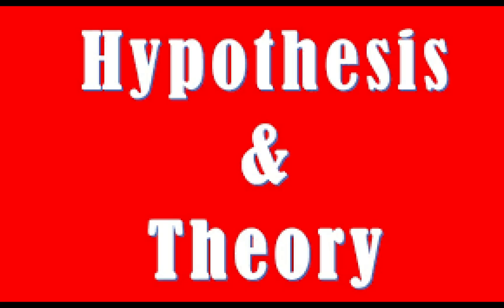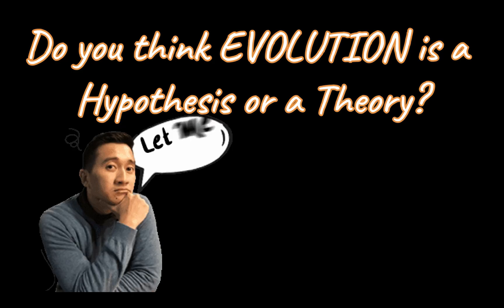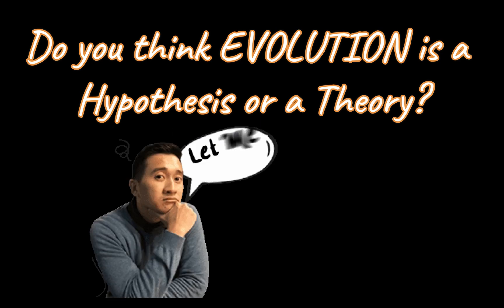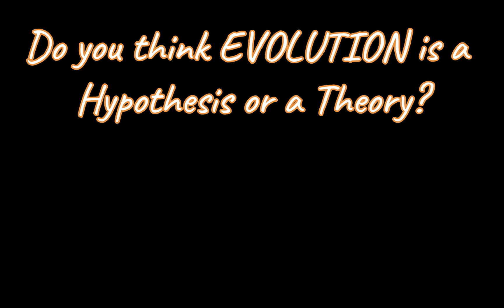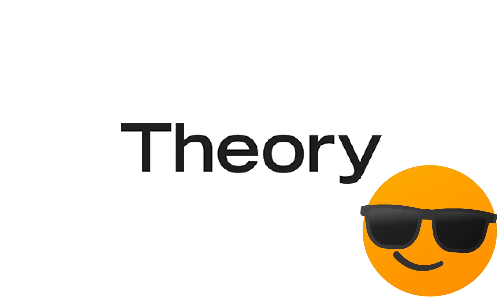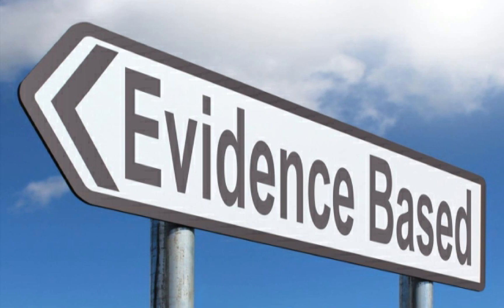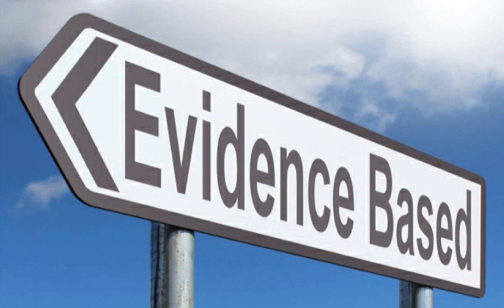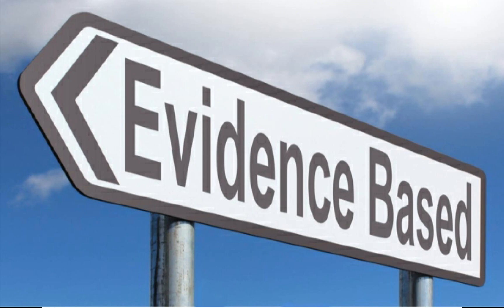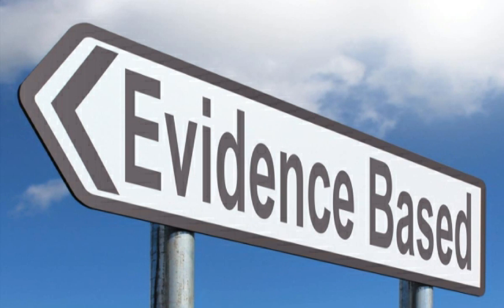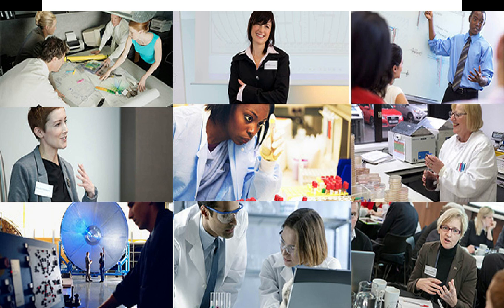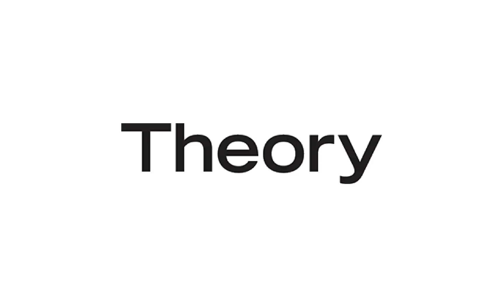Bearing in mind the difference between a hypothesis and a theory, is evolution a hypothesis or a theory? Evolution is a theory, not a hypothesis, because it has been confirmed through multiple lines of evidence. In the beginning it would have been regarded as a scientific hypothesis, until all the different pieces of evidence were carefully examined, discussed, written about, and thoroughly tested — and then that hypothesis became a theory.